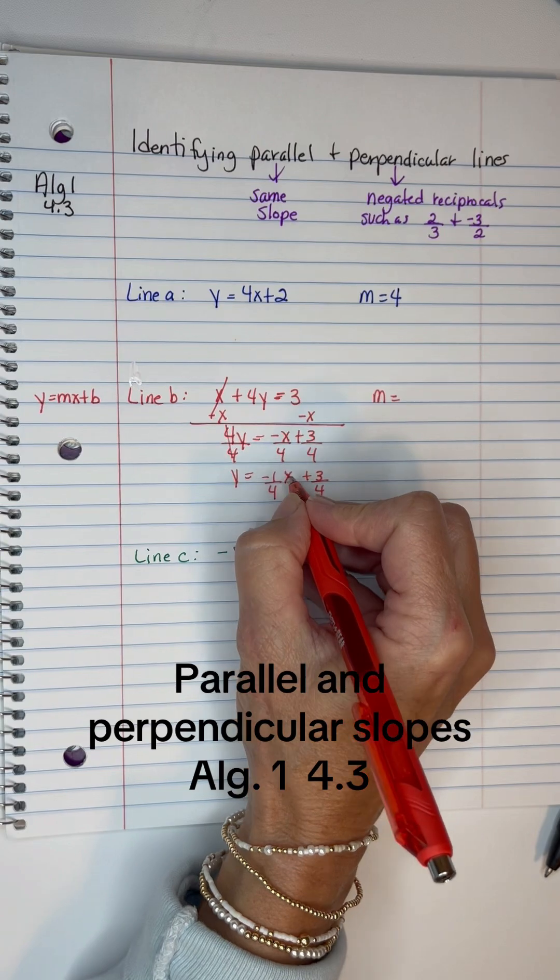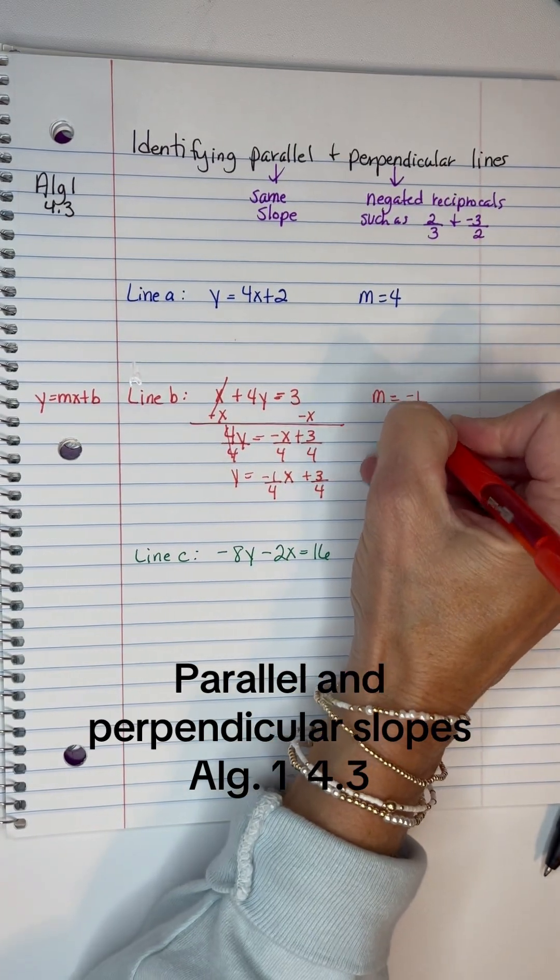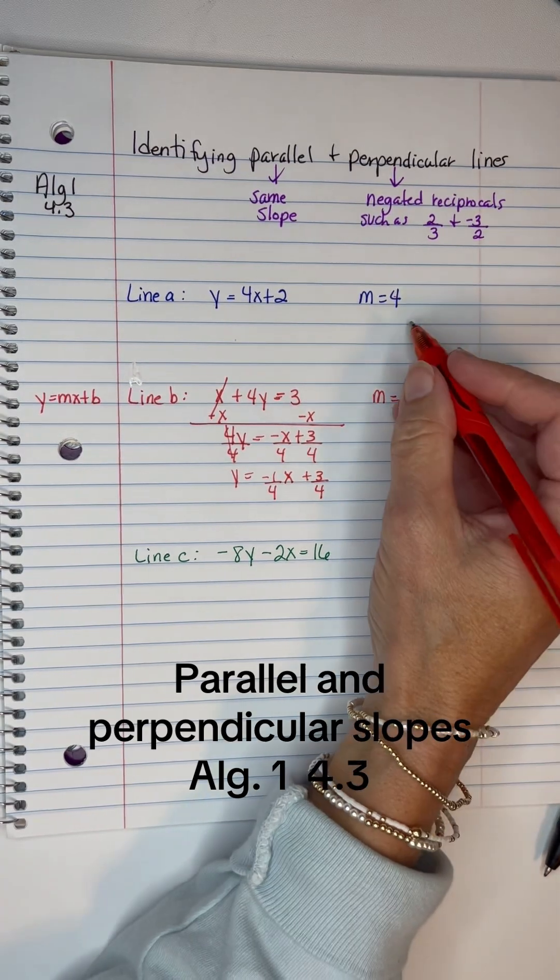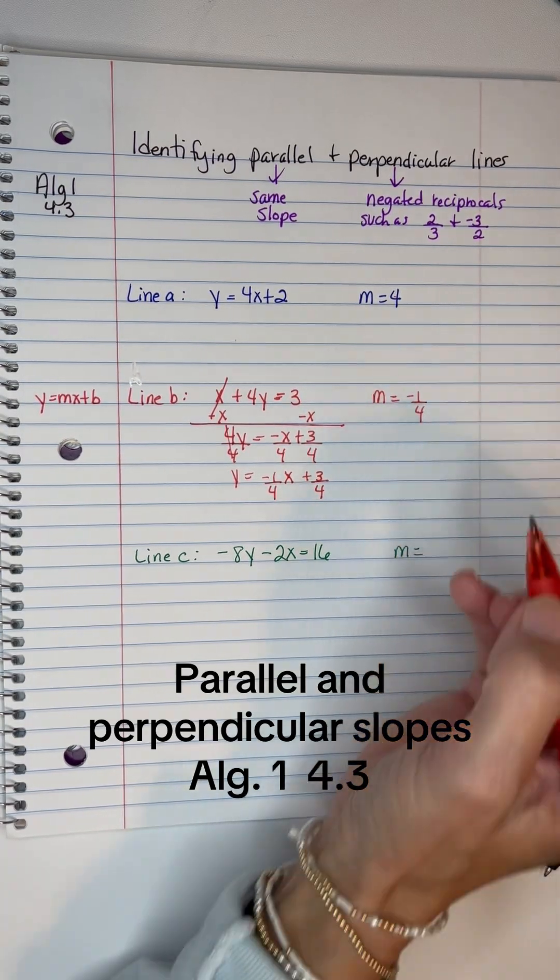We know the slope is the number in front of the x, so it's -1/4. And I can already tell that these two are negated reciprocals, and that means those would be perpendicular to each other.